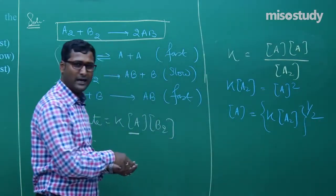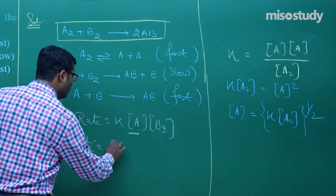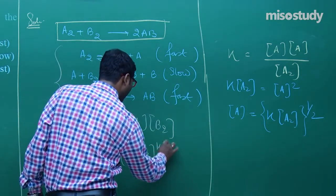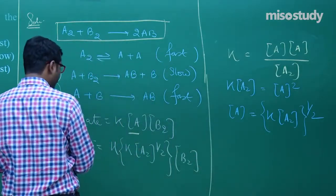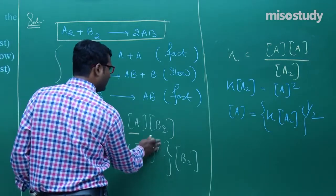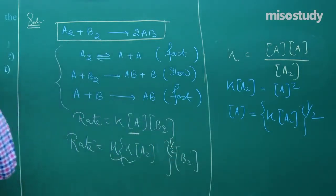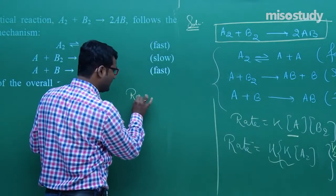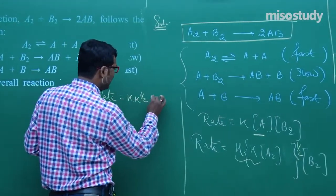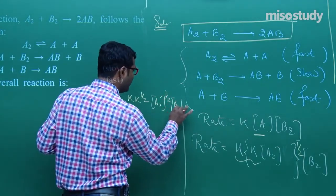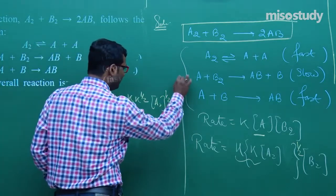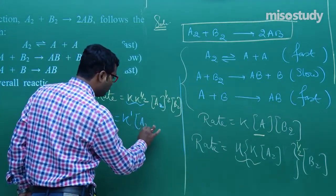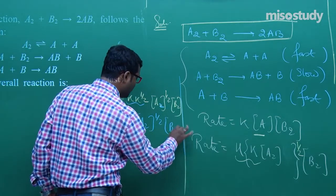Substituting [A] = K^(1/2)[A₂]^(1/2) into rate = K[A][B₂]: rate = K × K^(1/2)[A₂]^(1/2) × [B₂]. Combining constants K and K^(1/2) into a new constant K': rate = K'[A₂]^(1/2)[B₂]. This is the final rate expression.